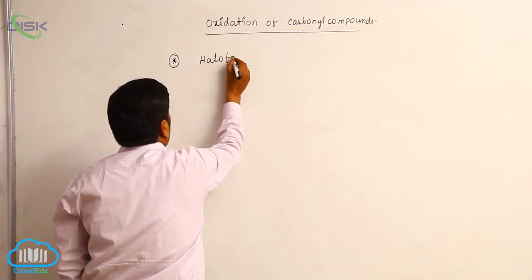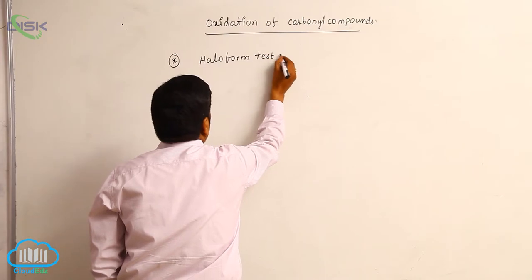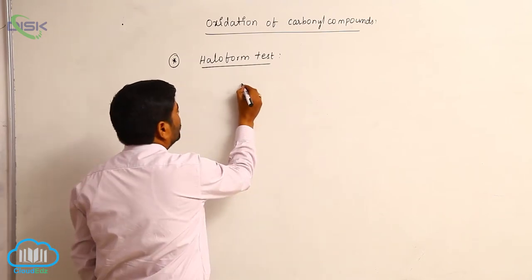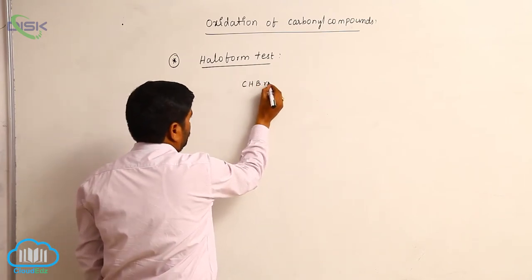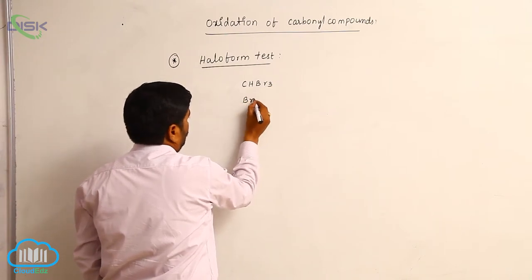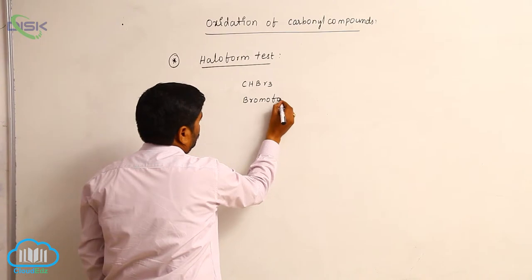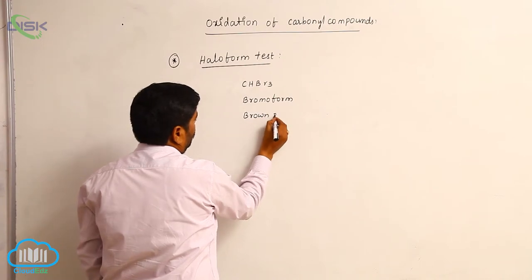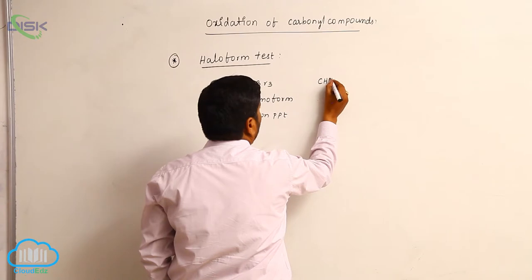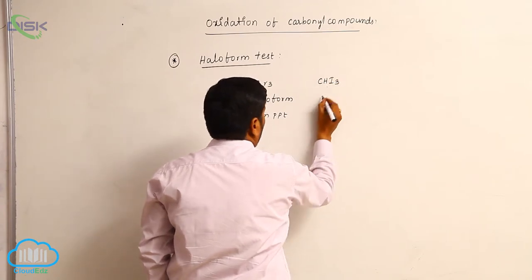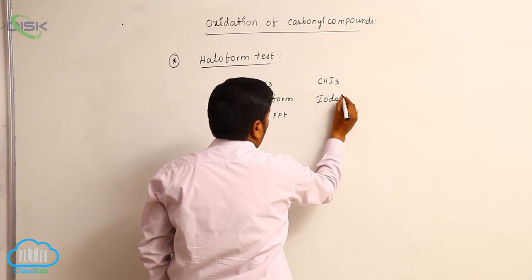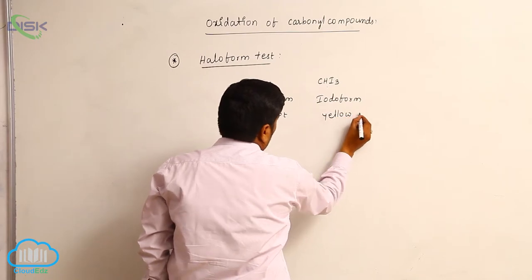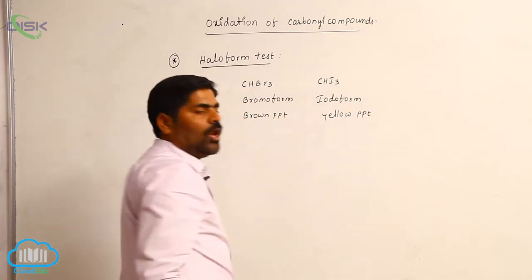The third test is the Haloform test. CHBr₃ is known as bromoform — it is a brown color precipitate. CHI₃ is known as iodoform — it gives a yellow color precipitate.